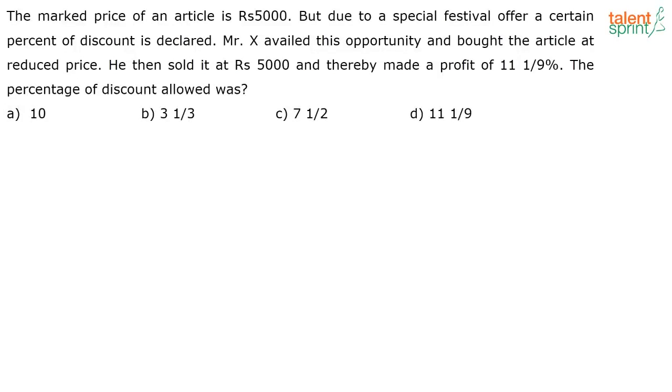Next question is on your screen. The marked price of an article is Rs 5,000, but due to a special festival offer, a certain percent discount is declared. Mr. X availed this opportunity and bought the article at a reduced price. He then sold it at Rs 5,000 and thereby made a profit of 11 1/9 percent. The percentage of discount allowed was?